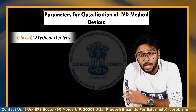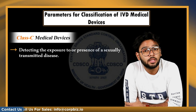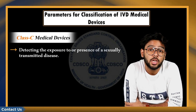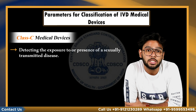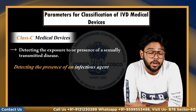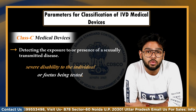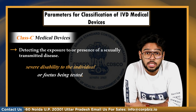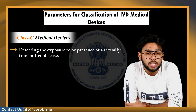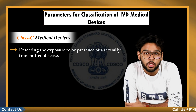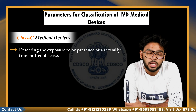Next is Class C. Class C is used for detecting the exposure to or presence of sexually transmitted diseases, detecting the presence in cerebrospinal fluid or blood of an infection agent with a risk of propagation, prenatal screening of women to determine their immune system status towards transmissible agents, detecting the presence of an infectious agent where there is a significant risk that an incorrect result will cause death or severe disability to the individual or fetus being tested, determining the infective disease status or immune system status where there is a risk that an erroneous result will lead to patient management decisions resulting in an imminent life-threatening situation for the patient being tested. Testing of human genetics are also classifications for Class C devices.